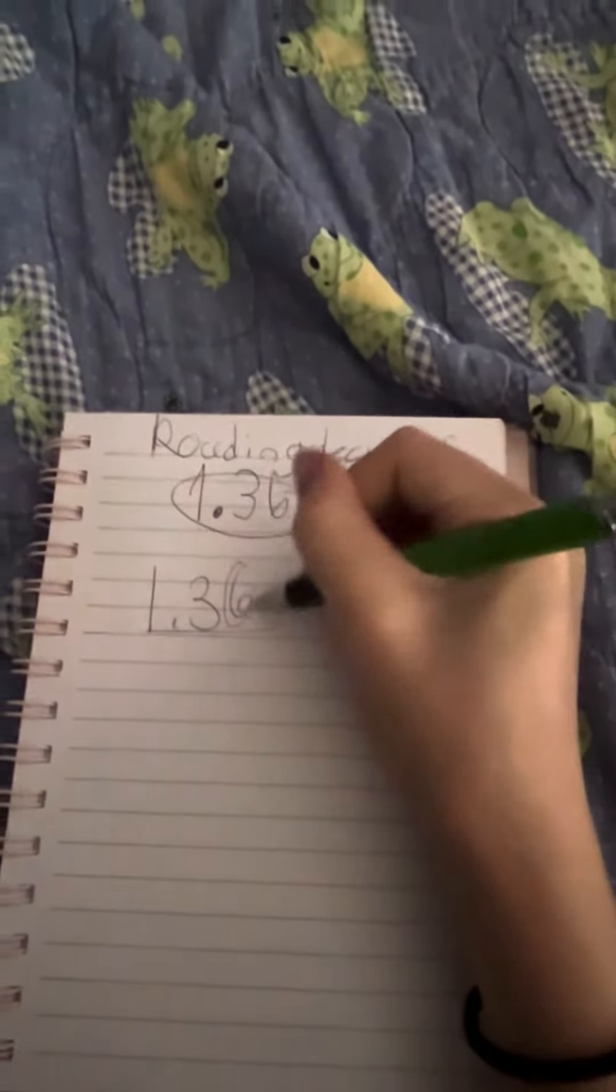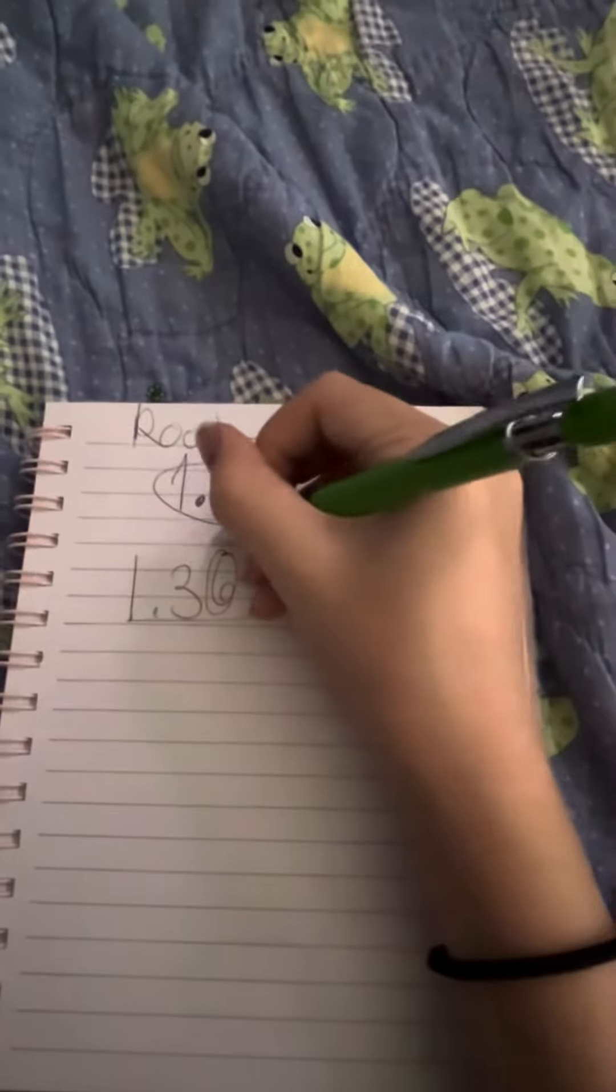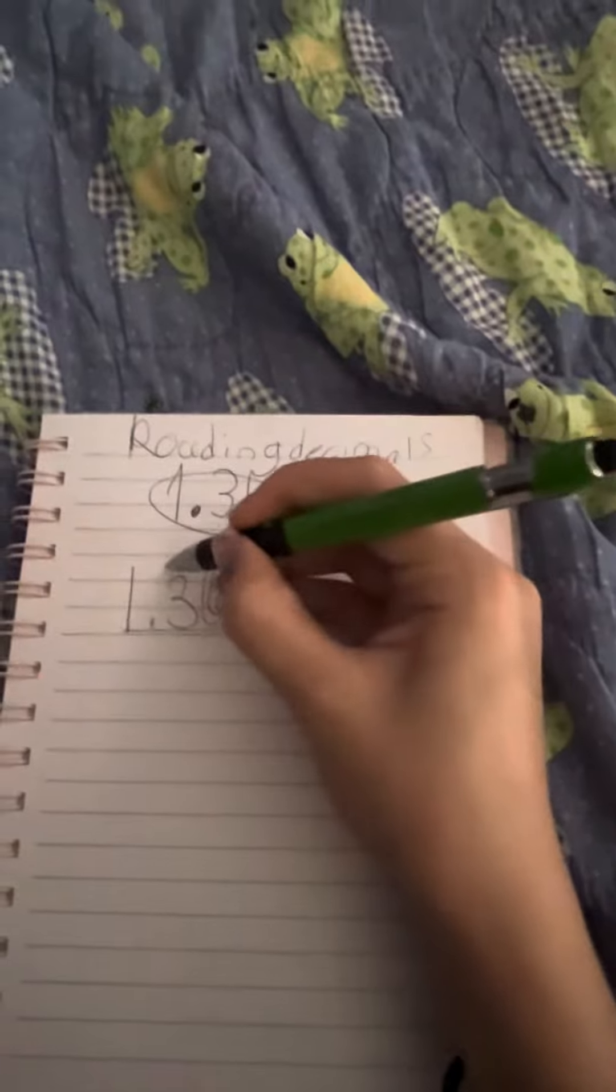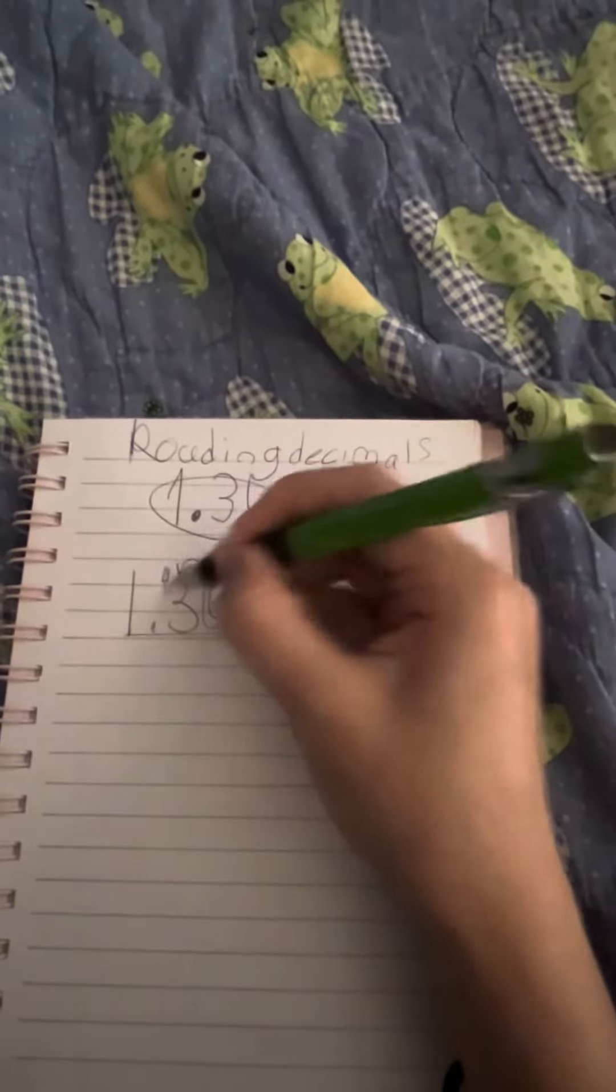We look at the whole number. We look at the last number, it is 6. So we're going to add plus 1 to the 3. So that would make it 4. We all know basic math here, right?